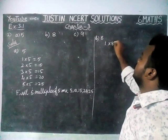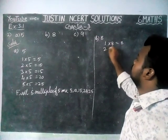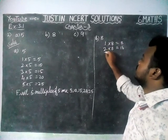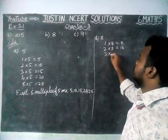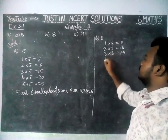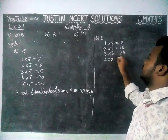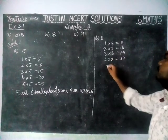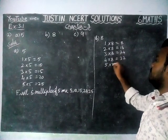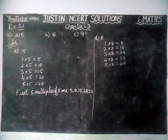Option B: 8. 1 eight is 8, 2 eights are 16, 3 eights are 24, 4 eights are 32, 5 eights are 40.